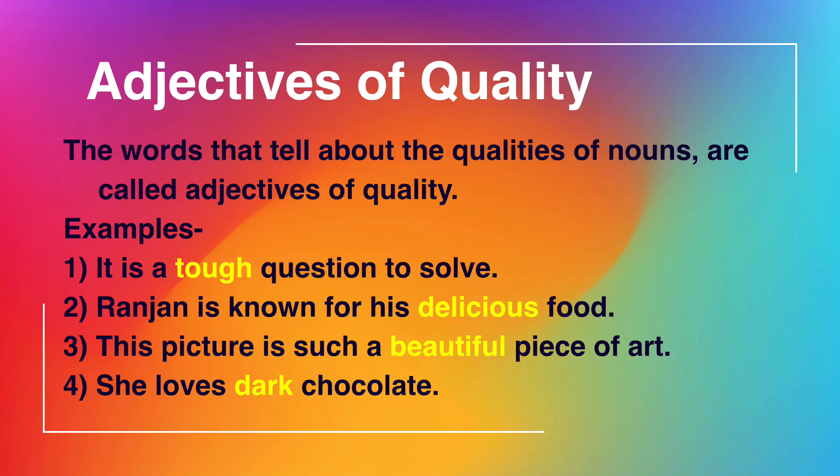Another example: 'She loves dark chocolate.' She loves chocolate — but what kind of chocolate? Dark chocolate. So 'dark' defines the quality of the noun 'chocolate' — it is an adjective of quality. We will see more examples in the exercise part.